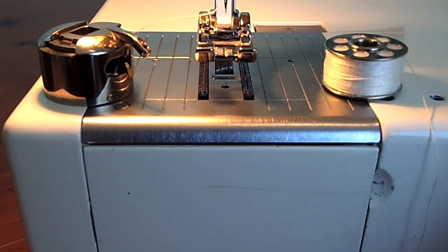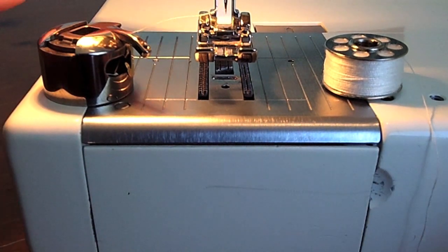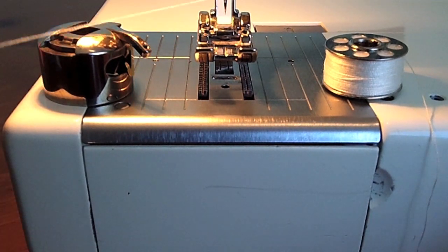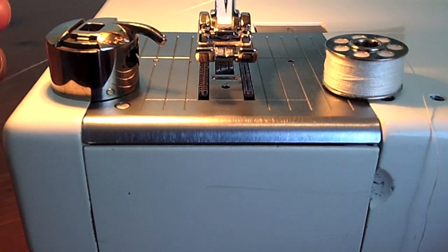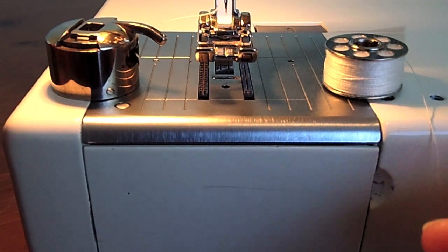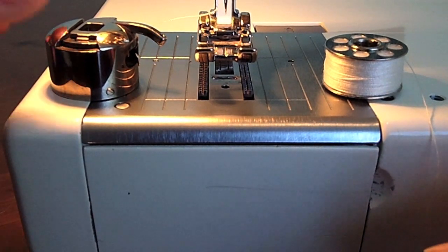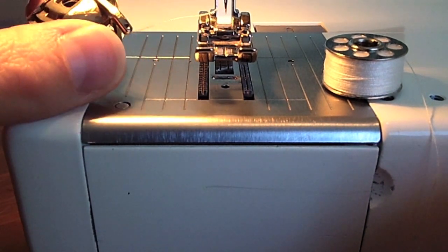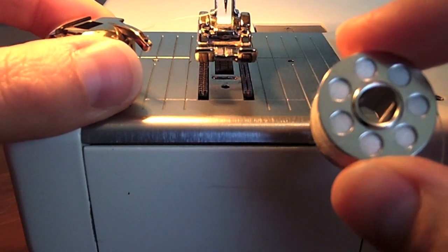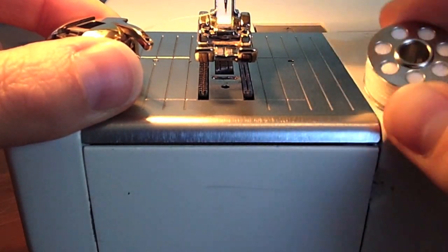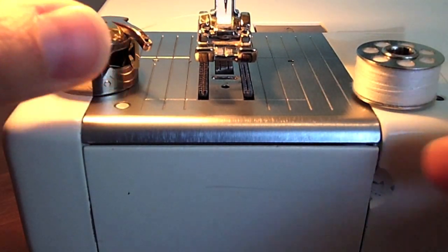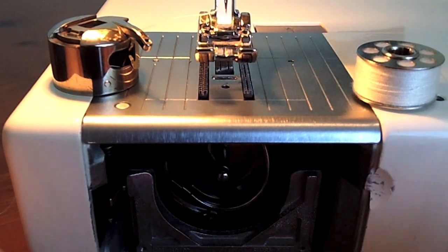Let's get started. I've already threaded the top of my sewing machine, so that's ready to go. To load the bobbin into the machine, you need to make sure you have your bobbin case. I've got my bobbin here that's already been loaded up with thread, and I'll just open the front cover as well.